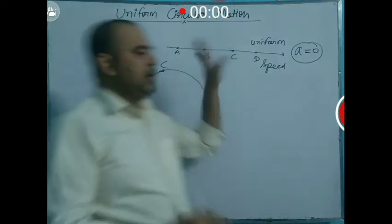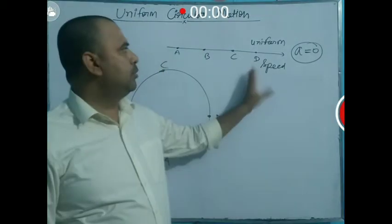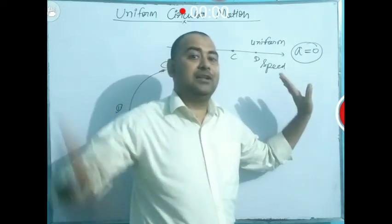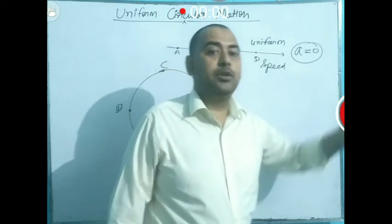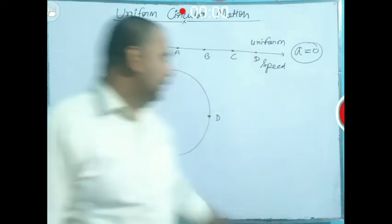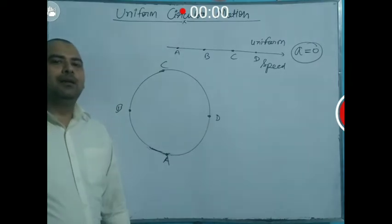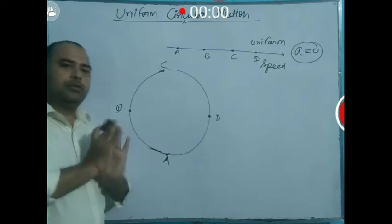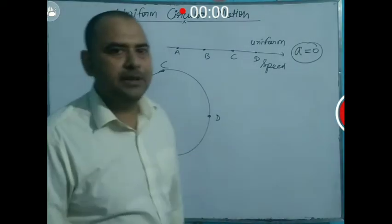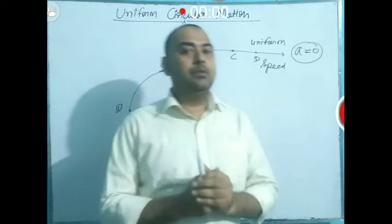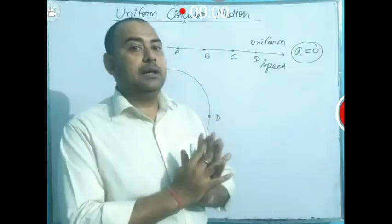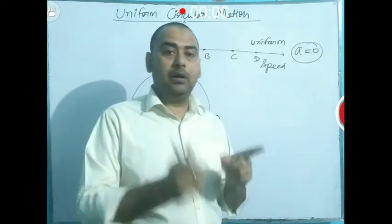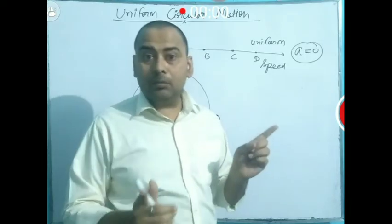Now, compare straight-line motion and circular motion. In straight-line uniform motion, the acceleration is zero — the body is not in accelerated motion. This is the main point: if a body is moving on a circular path with uniform speed, then the body is doing uniform circular motion.